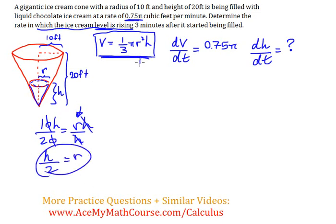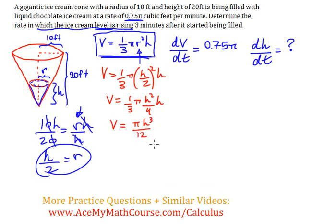Now, I can take that and plug it in right here. So I will get v equals 1 third pi times h over 2 squared times the height. Now, h squared, just h squared, 2 squared is 4, and I can simplify this as, I can just rewrite it as pi h cubed over 12. H squared times h, h cubed, 3 times 4, 12.